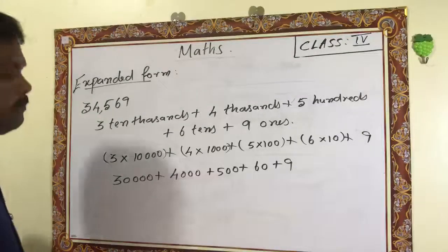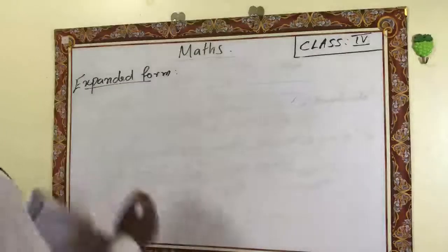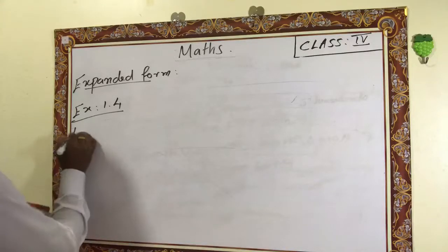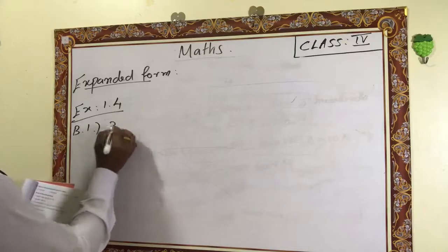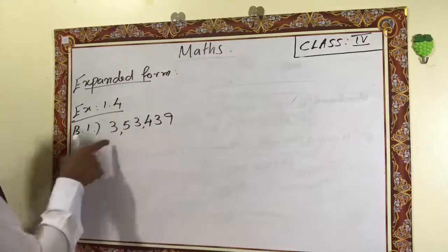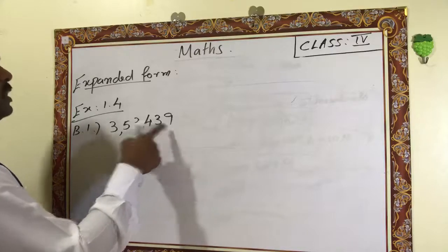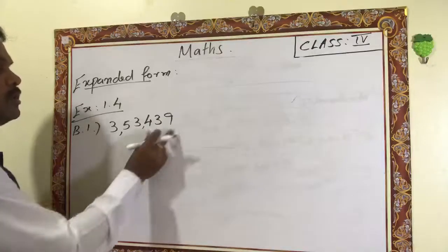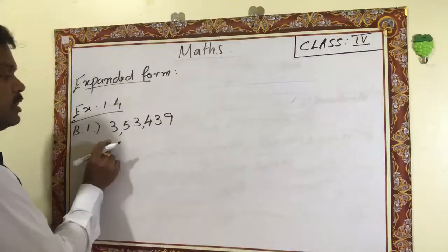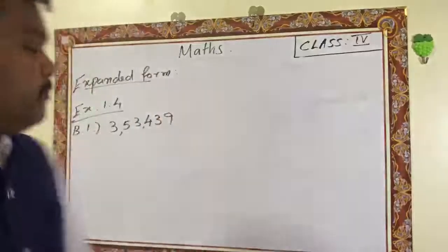From Exercise 1.4, first question, b one: three lakhs, fifty-three thousand, four hundred and thirty-nine. It is very easy when you put the comma. Remember the place value chart — the first three columns are ones, next two are thousands, next is the lakhs column. So three lakhs, fifty-three thousand, four hundred and thirty-nine. Now expand: three lakhs...